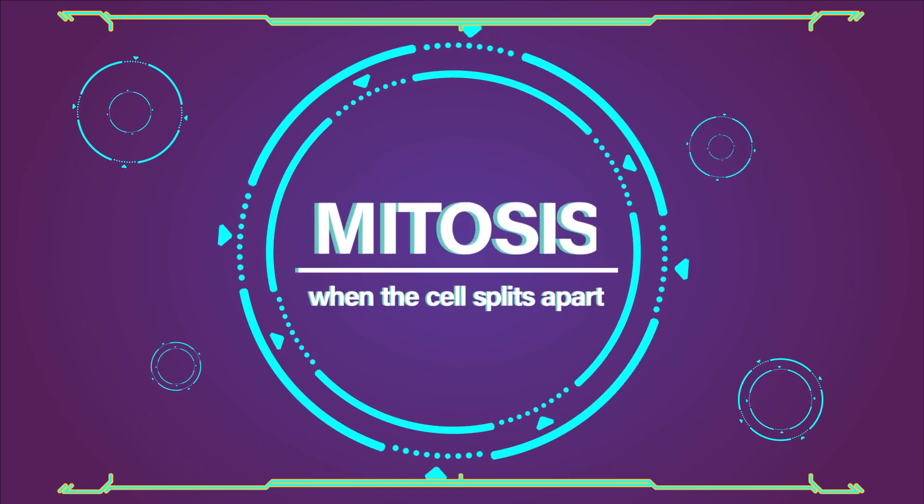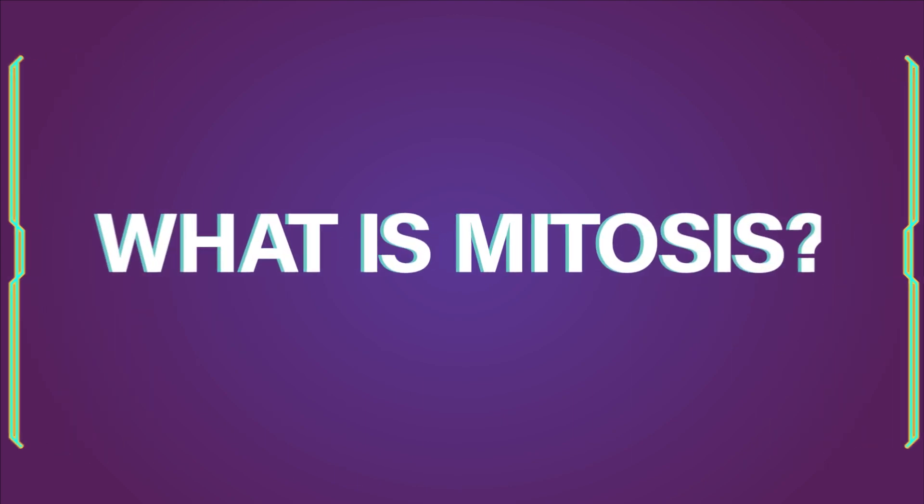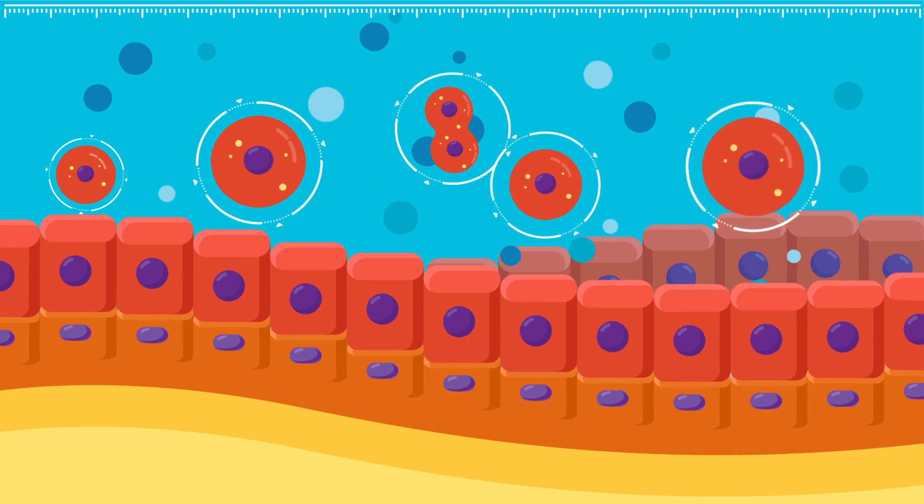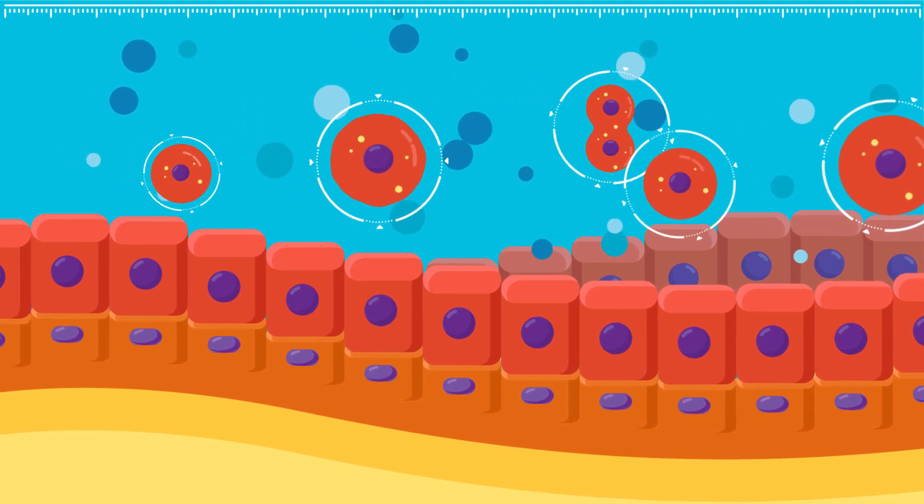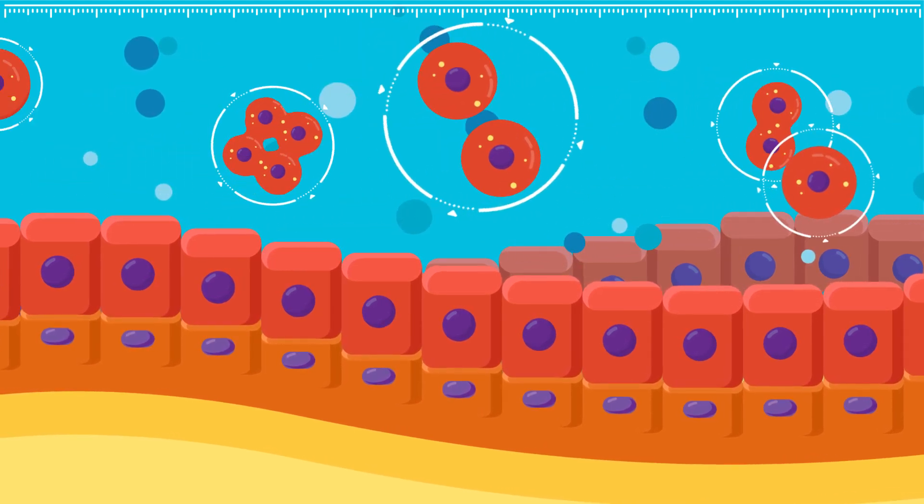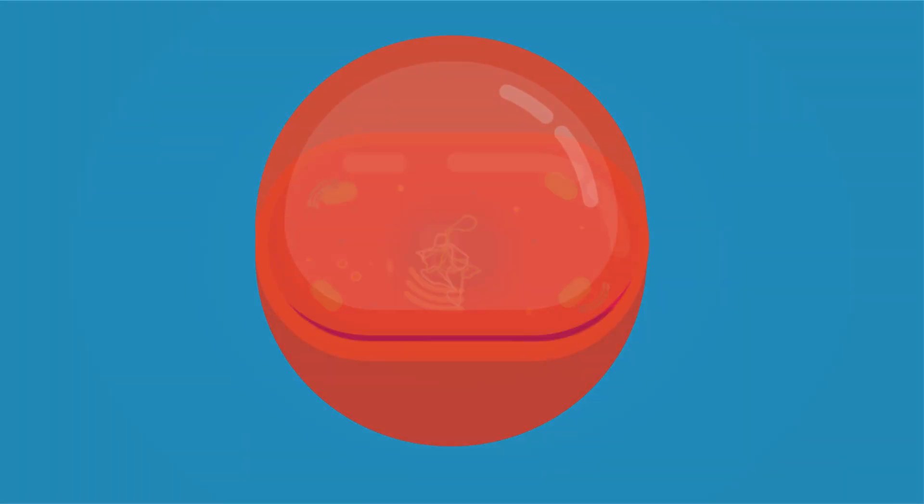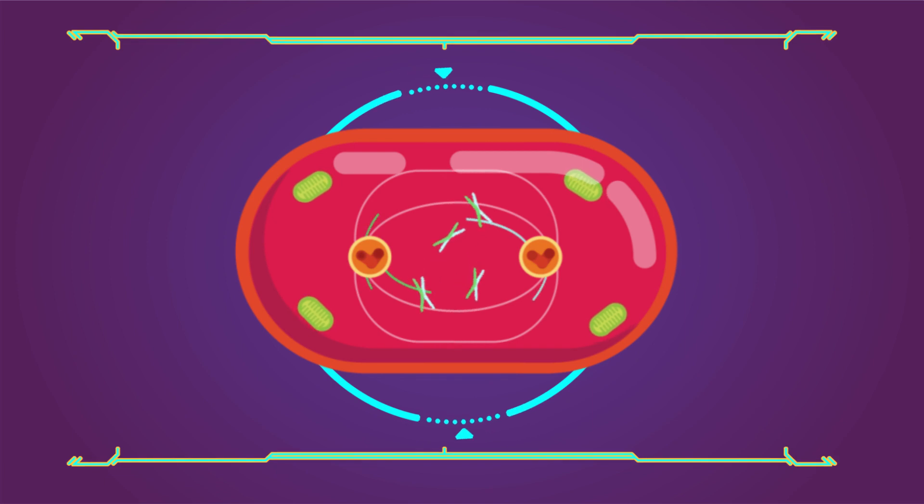Mitosis: when the cell splits apart. What is mitosis? Eventually cells need to duplicate. There are two main methods of replication: mitosis and meiosis. This tutorial will talk about mitosis. The big idea to remember is that mitosis is the simple duplication of a cell.